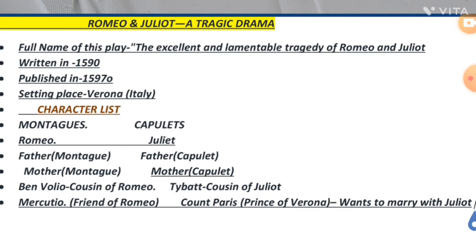Juliet told Fr. Laurence about her situation. She said she did not want to marry Count Paris. Fr. Laurence gave her a potion — a sleeping potion. She took the potion and fell into a deep sleep, appearing as if she had died.